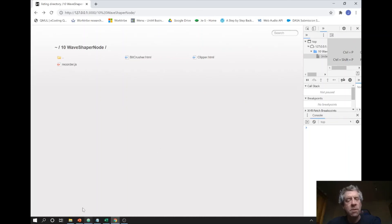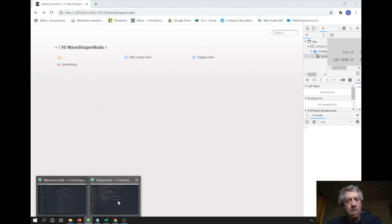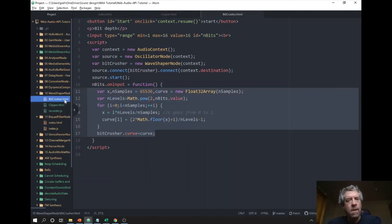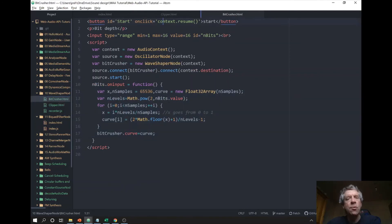Now let's look at the BitCrusher. Same basic idea as before, but here my control is controlling the bit depth, ranging from 1 to 16, starting with high bit depth. We have an oscillator, we pass it through the wave shaper, so source is being bit crushed to the destination.